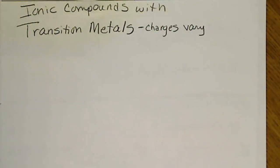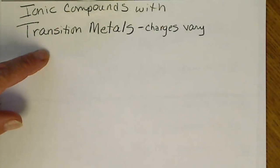Now we're going to look at ionic compounds that still have a metal and a nonmetal. Charges still cancel to zero. But now we're going to look at the transition metals.